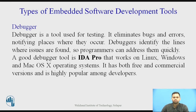The next tool is Debugger. A debugger is a tool used for testing — it eliminates bugs and errors, notifying the places where they occur. The debugger identifies the lines where issues are found so the programmer can address them quickly. A good debugger tool is IDEPRO, which works on Linux, Windows, and Mac OS X operating systems. It has both free and commercial versions and is highly popular among developers.